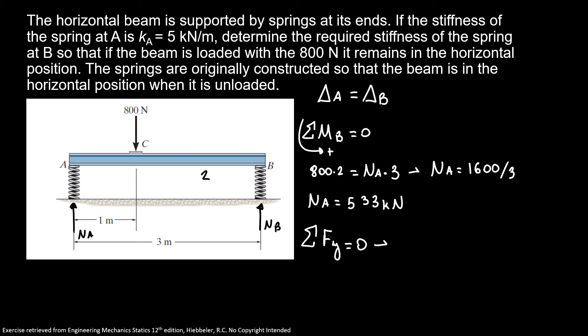Now we can discover normal B using the sum of forces in Y equals 0. So we have NA plus NB equals 800. So NB equals 800 minus 533, so our NB equals 267 newtons.